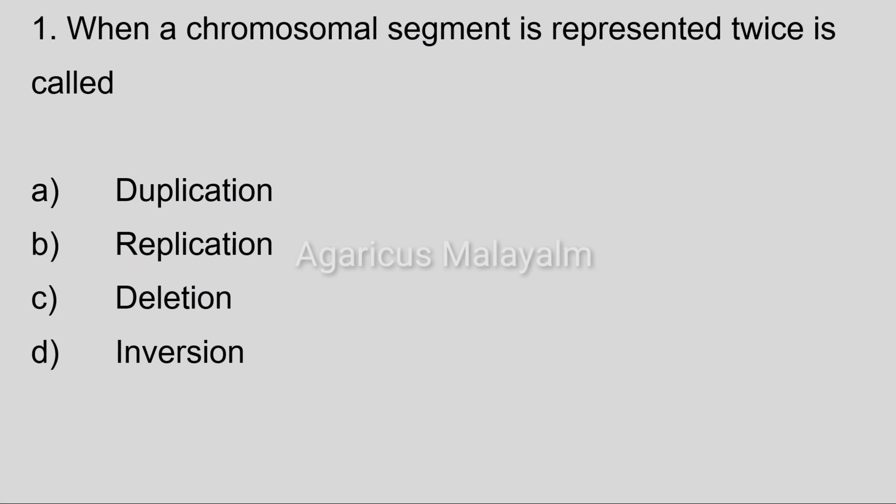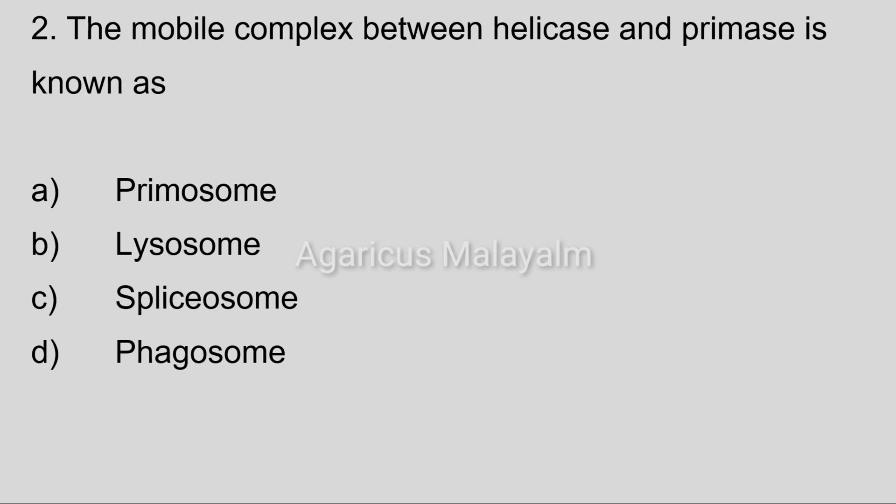First question: When a chromosomal segment is represented twice, it is called? Option A: Duplication. Option B: Replication. Option C: Deletion. Option D: Inversion. Correct answer: Option A, Duplication.